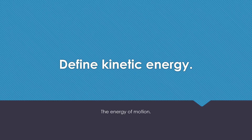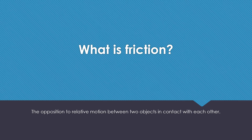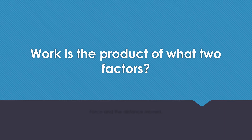It is the energy of motion. What is friction? The opposition to relative movement between two objects in contact with each other. Work is the product of what two factors? Force and distance moved.